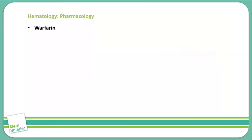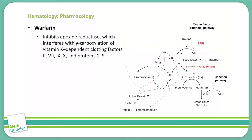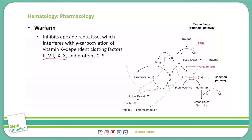Moving on, let's discuss warfarin. Warfarin inhibits epoxide reductase, which is going to interfere with our gamma carboxylation of vitamin K-dependent clotting factors. The specific clotting factors it works against are 2, 7, 9, 10, protein C, and protein S.